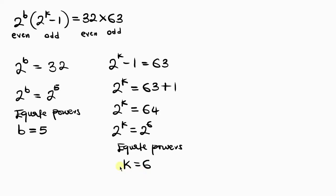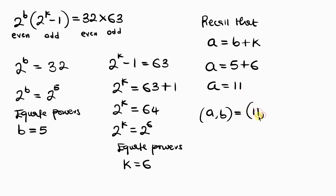Now we can use this information to look for a. Recall that we said a = b + k. Let's substitute the values of b and k in this expression. So a = 5 + 6 = 11. So a and b, their values equal (11, 5). And this is our final answer.